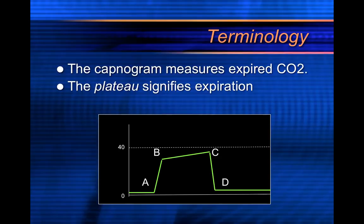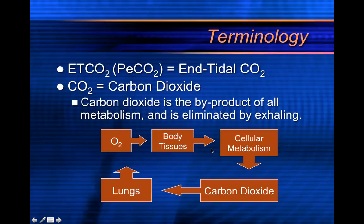The capnogram measures expired CO2, and the plateau signifies expiration. Looking at the waveform, B to C is your plateau, and the C value is where you get your end tidal CO2. End tidal CO2 is sometimes referred to as PETCO2 — that's your abbreviation: ETCO2 or PETCO2. CO2 is carbon dioxide: C is carbon, O is oxygen, and there are two, so it's dioxide.